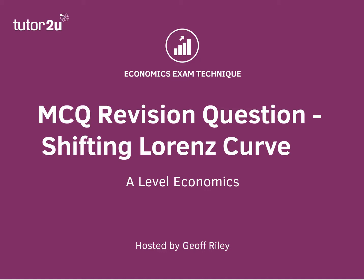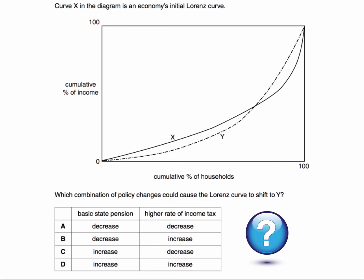Hi there. Here is a really interesting question on inequality, one of the new style multiple choice questions for the A-level exams. So let's take a look at it. Curve X in the diagram is an economy's initial Lorenz curve. A Lorenz curve is a cumulative frequency curve showing how income changes as you move from poorer to richer households. X is the initial Lorenz curve and the question is which combination of policy changes could cause the Lorenz curve to shift from X to Y.